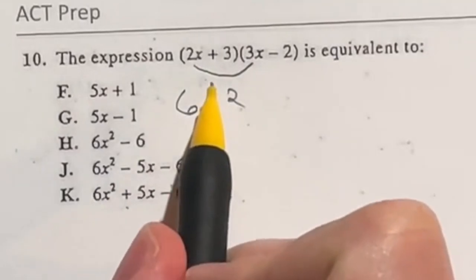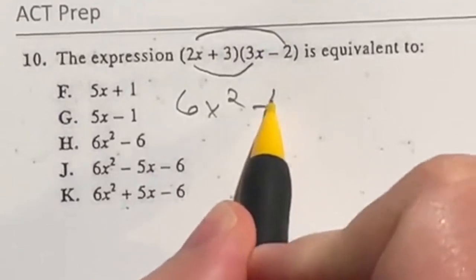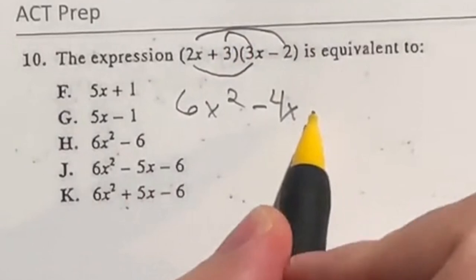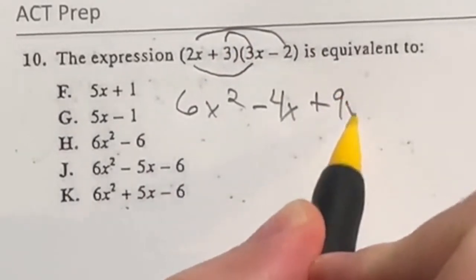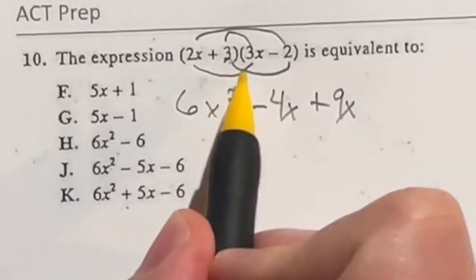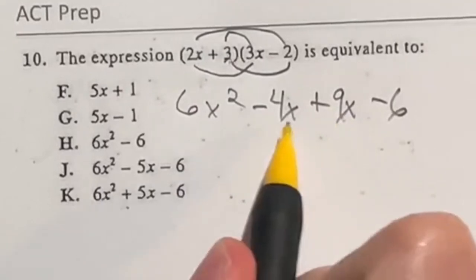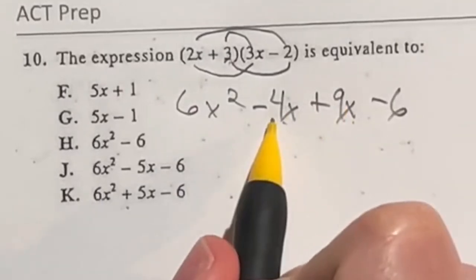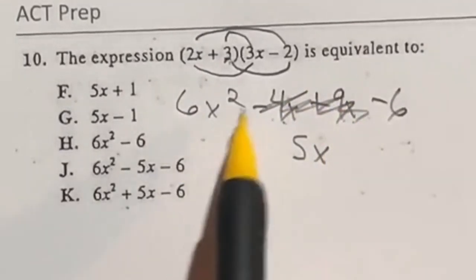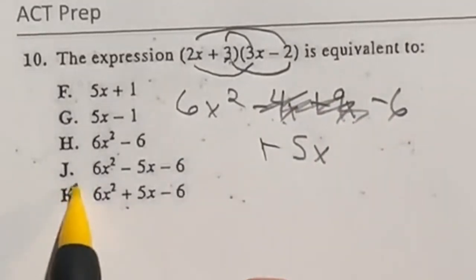Then when we're looking at foil our next one is the outside. So that's going to be the 2x times this negative 2 over here which gives me negative 4x. Then we're going to do the inside in foil, so 3 times the 3x that's going to give me 9x. And then we're going to have the last which is the 3 times that negative 2 which is going to end up giving me negative 6. Now this middle term right here can combine together because they both just have an x. So 9 minus 4 is going to end up giving me 5x. So really we're looking at 6x squared plus 5x minus 6. So that means our answer is K.